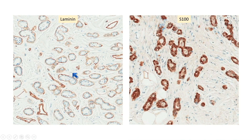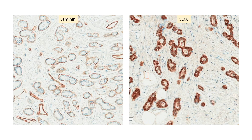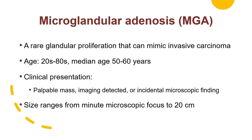The glands are surrounded by basement membrane, highlighted by immunohistochemistry for laminin and collagen IV. This is the laminin stain. S100 is positive. With this information, the diagnosis is microglandular adenosis, or MGA — a rare glandular proliferation that can mimic invasive carcinoma.